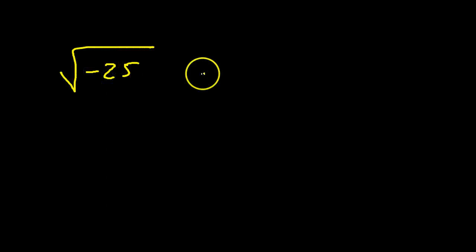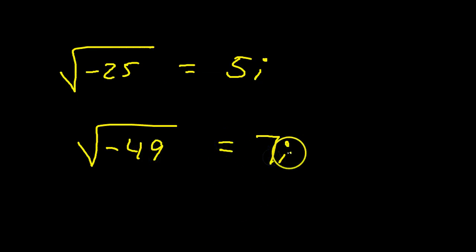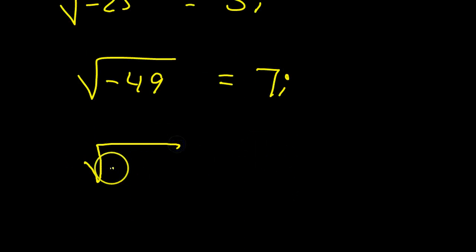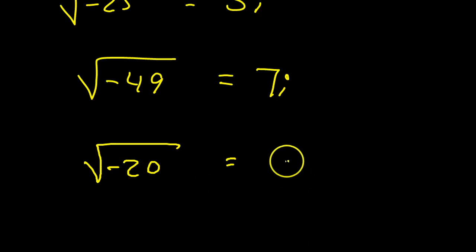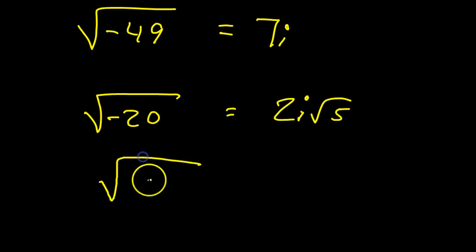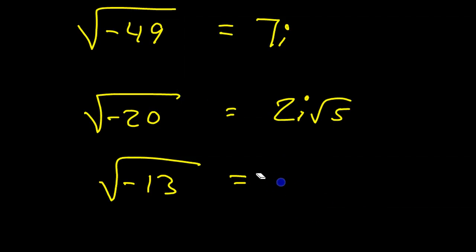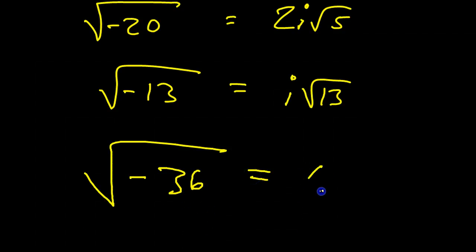Just practice that for a quick second. If I said what is the square root of negative 25, I would expect you to say 5i. What's the square root of negative 49? That would be 7i. By the way, if I wanted to do the square root of negative 20, the square root of 20 is 2 radical 5, so this would be 2i radical 5. And if I had the square root of negative 13, something that can't simplify at all, you would just put i root 13. One more time: if I had the square root of negative 36, that's 6i.